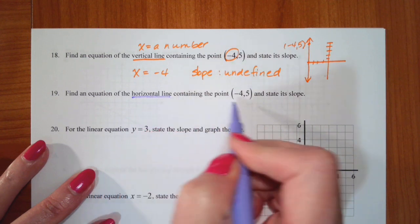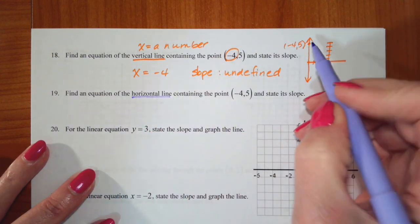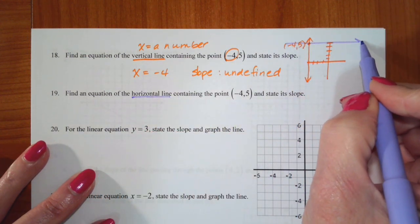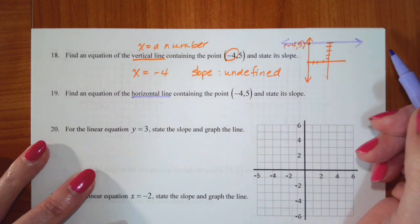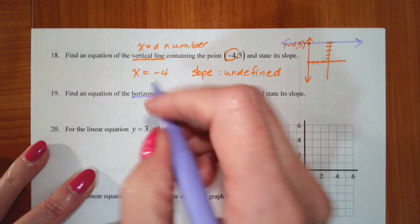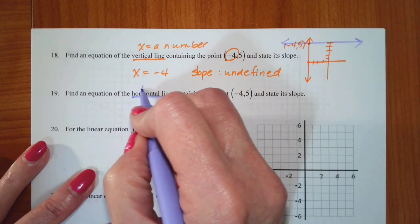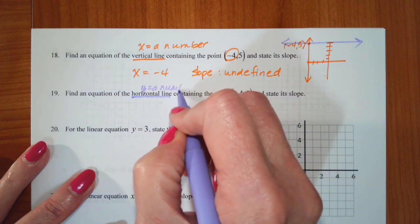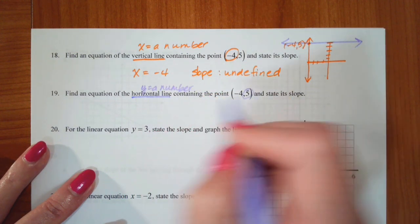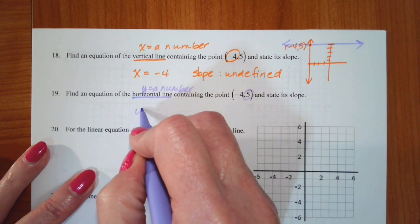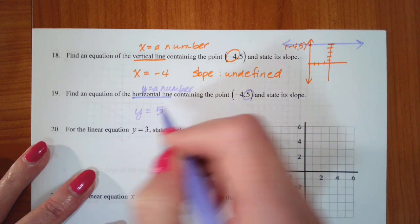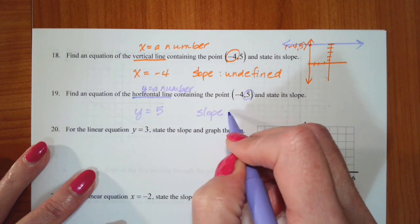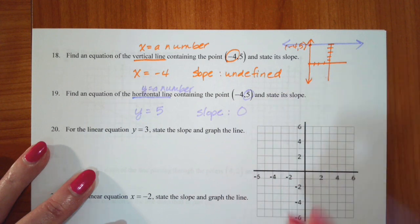The horizontal line containing this point: a horizontal line has the equation y equals a number, so the equation is y equals 5, and the slope is 0.